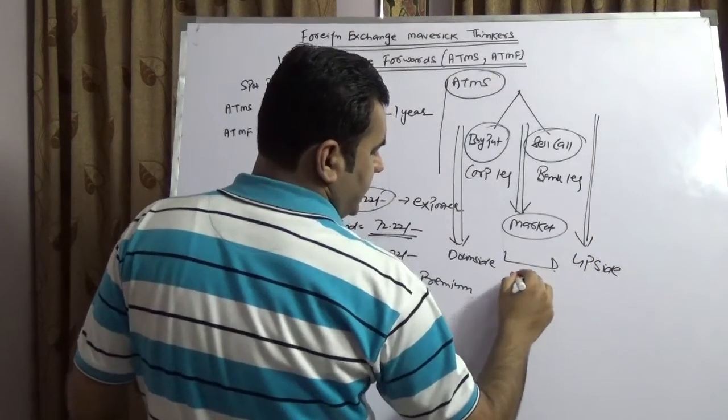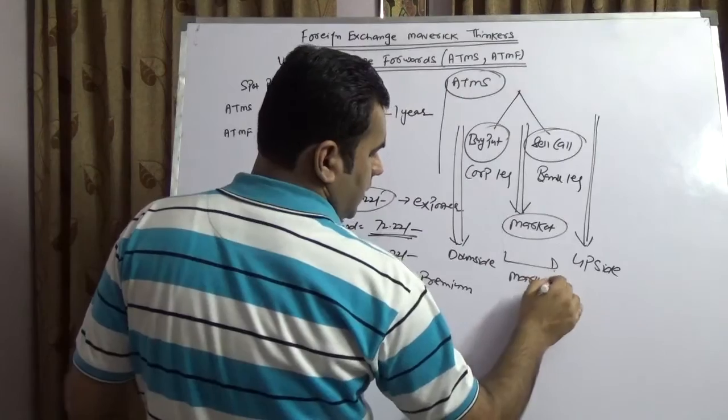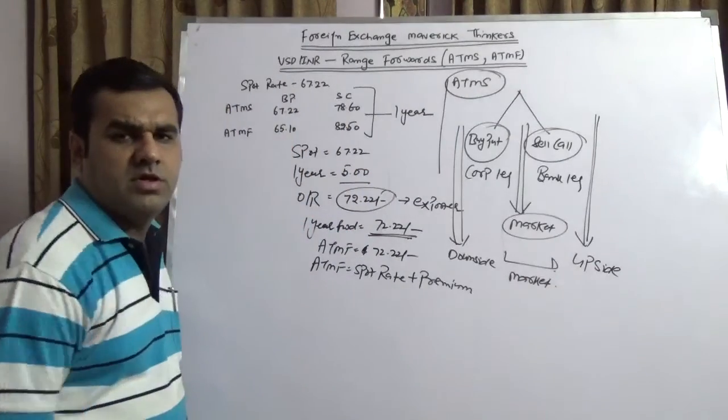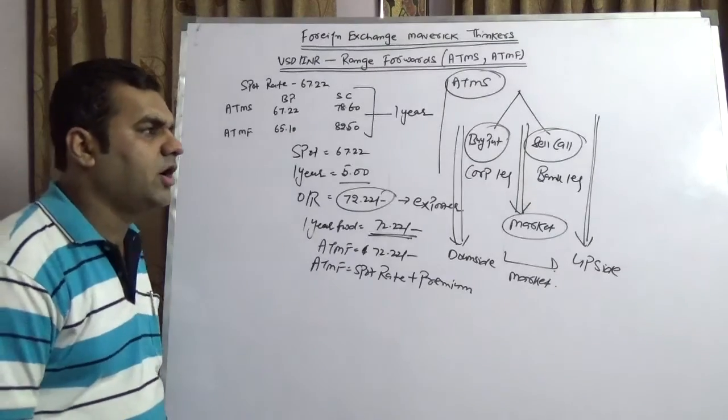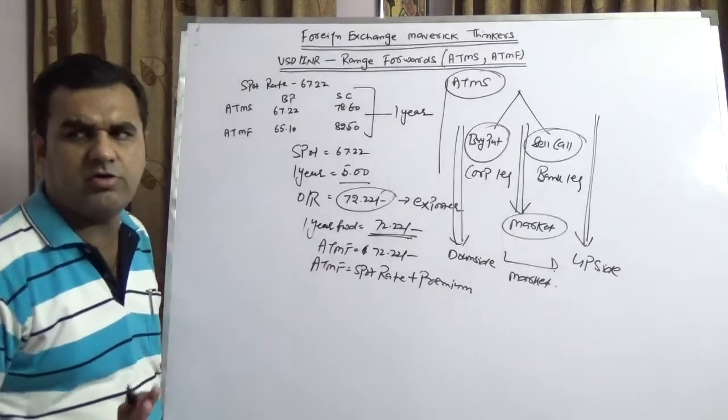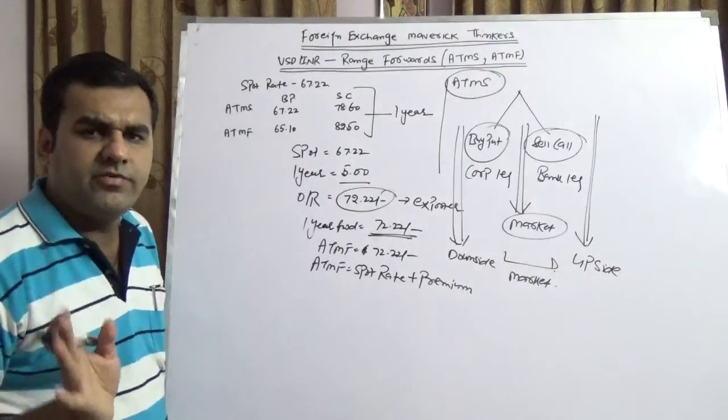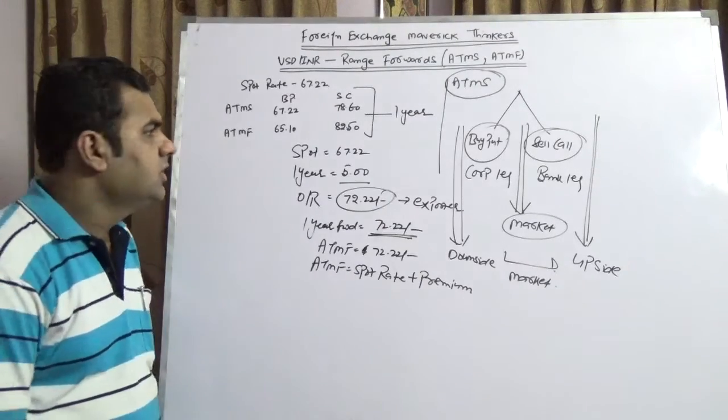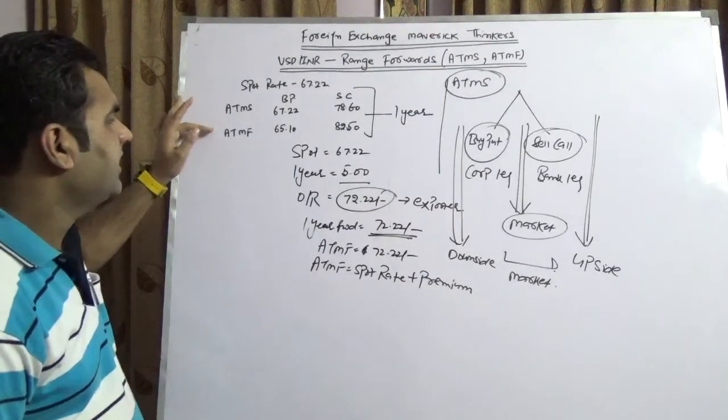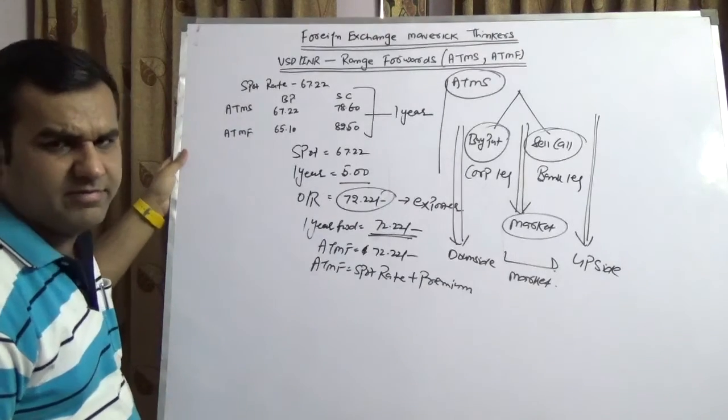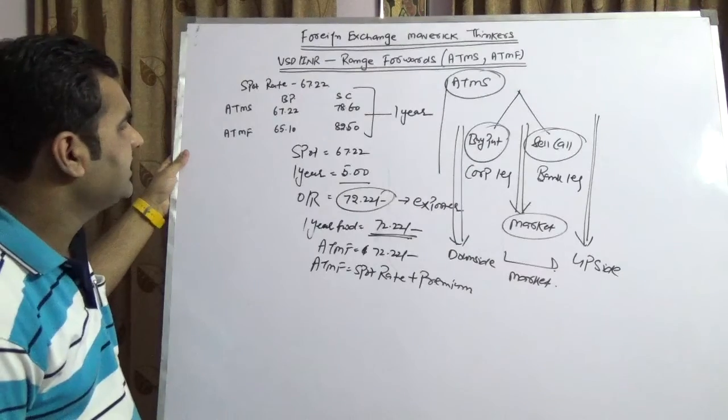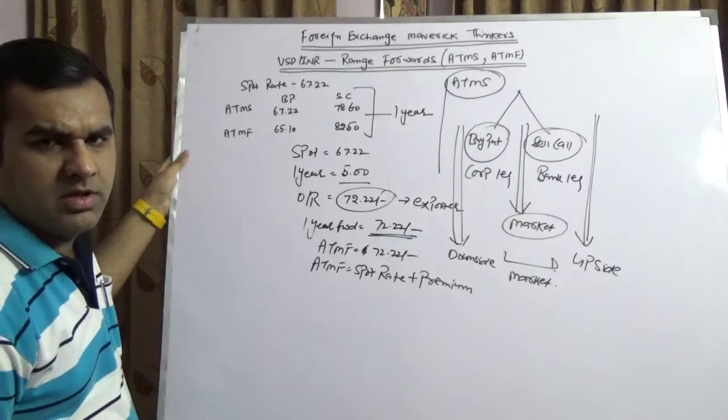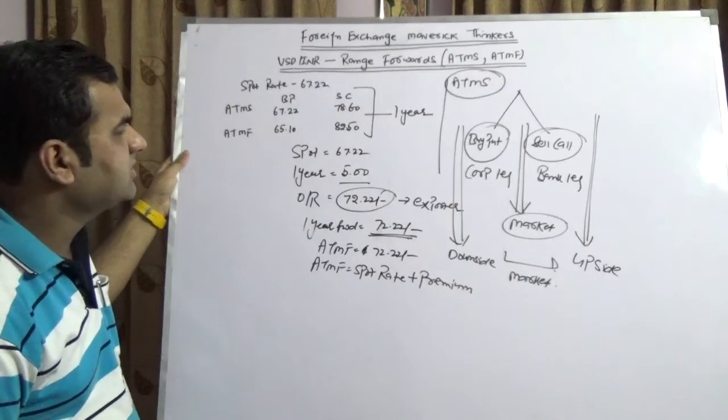In between we are having one thing which is market. So your downside, your upside, and your market, all three are protected. This is range forward exporter. We are not talking about an importer position here. We are taking an example of at-the-money spot and at-the-money forward. First I'm going to cover at-the-money spot.